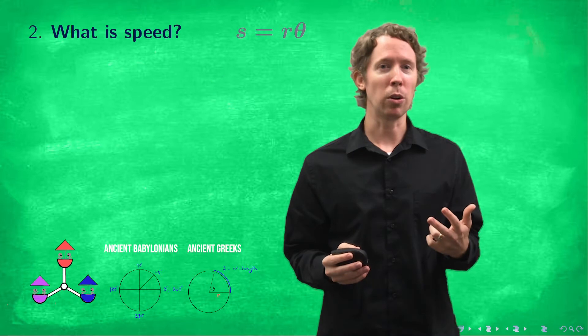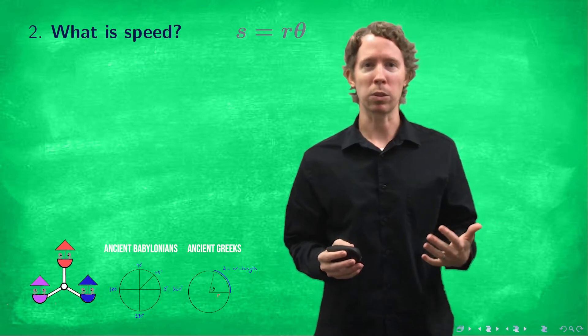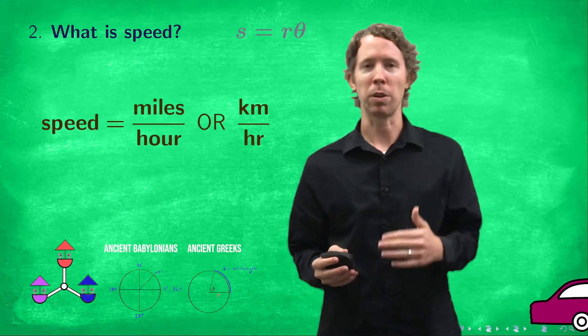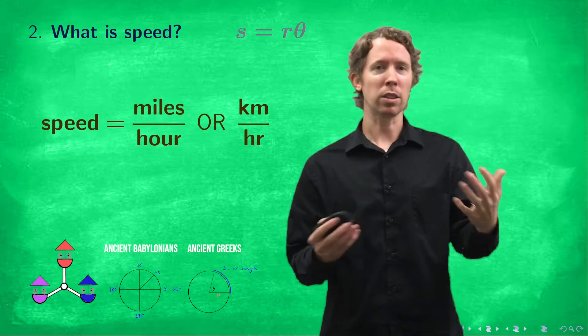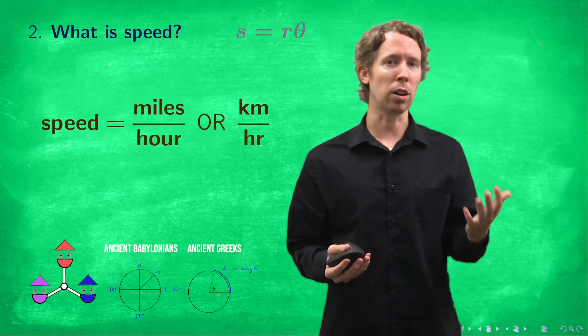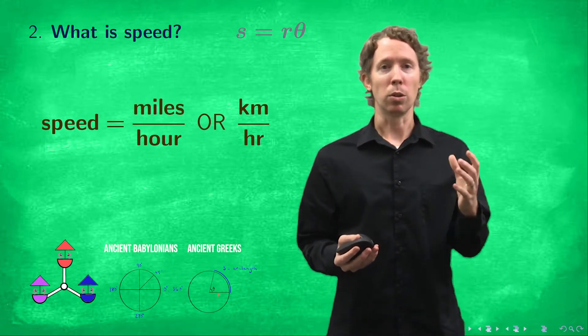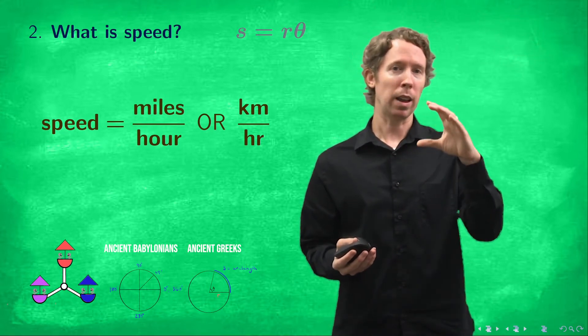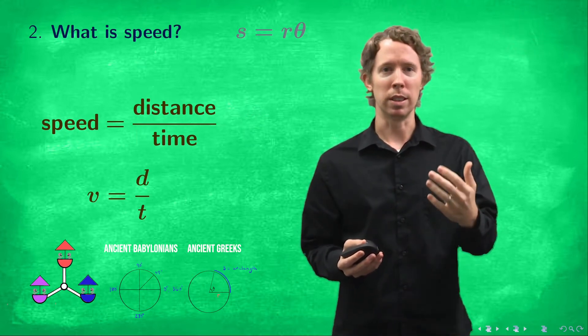The second thing you needed to know was how we measure speed. And the most common way that we interact with speed is in cars. And we measure speed in cars typically as miles per hour or kilometers per hour. So miles per hour is a distance divided by a time and that is our basic measurement for speed. We're already using s for arc length so we'll use v for speed. v will remind us of velocity. So speed is miles per hour or kilometers per hour and that represents the distance over time. So the equation that we'll get is v equals d over t.